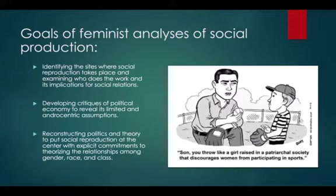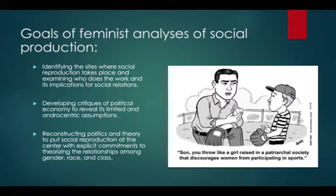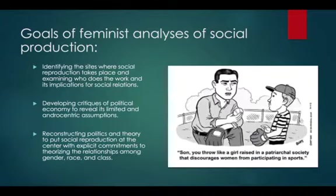Feminist analyses of social reproduction have three central goals according to Luxton. First, identifying the sites where social reproduction takes place and examining who does the work and its implications for social relationships — asking what structures, institutions, and social relations have to be produced in order to ensure continuity with the status quo. Second, feminist analyses develop critiques of political economy to reveal its limited and androcentric assumptions. Androcentric simply means focused on men or masculinity. For example, feminist IPE critiques mainstream IPE for failing to take into account gender and race divisions in systems of labor and for excluding the domestic activities that women perform from their conceptualization of the global economy.